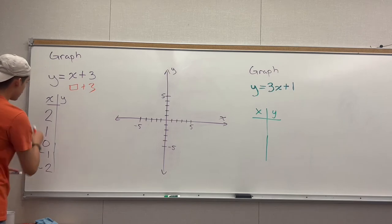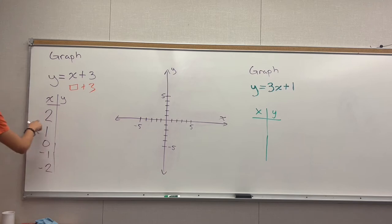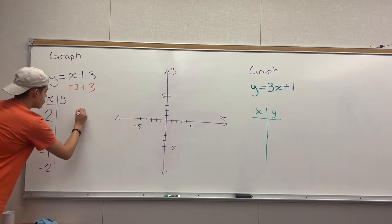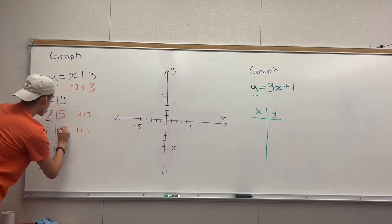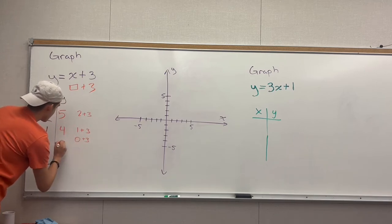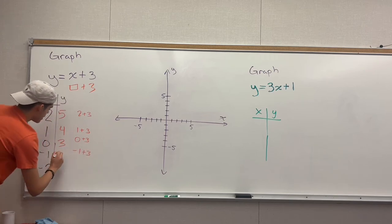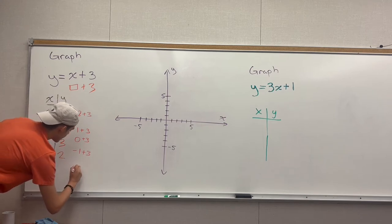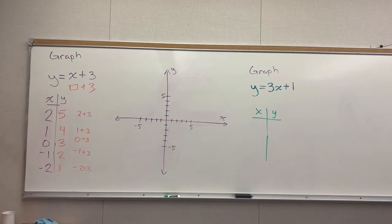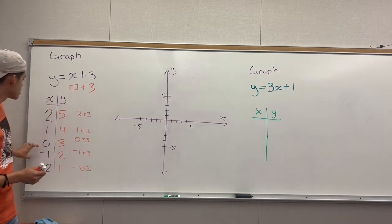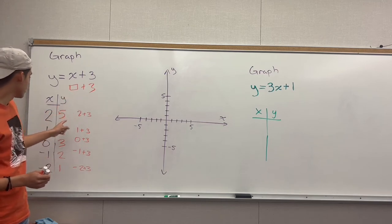So we're going to solve for y for all of these points. For x equals 2: 2 plus 3 gives you 5. For x equals 1: 1 plus 3 gives you 4. For x equals 0: 0 plus 3 gives you 3. For negative 1: negative 1 plus 3 gives you 2. For negative 2: negative 2 plus 3 gives you 1. So you put each x value into the equation, solve for it, and that gives you your y value.